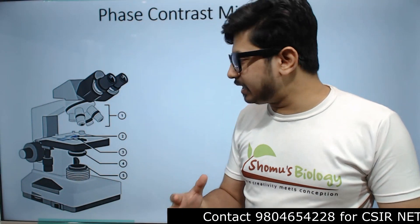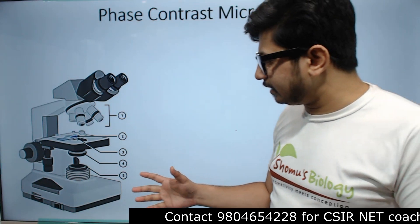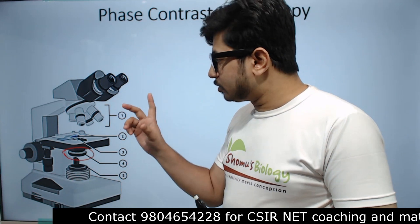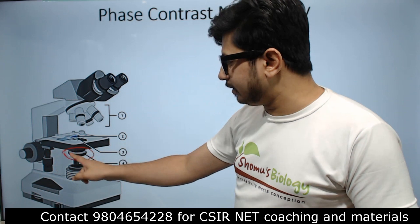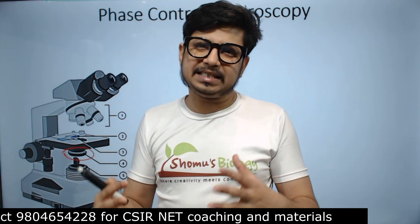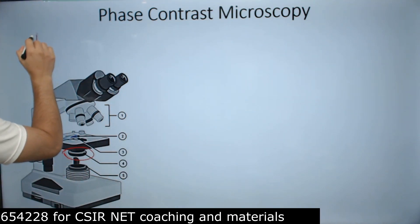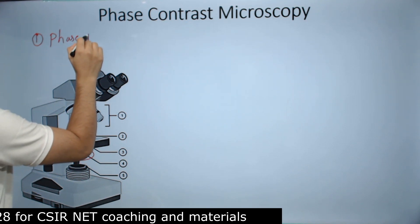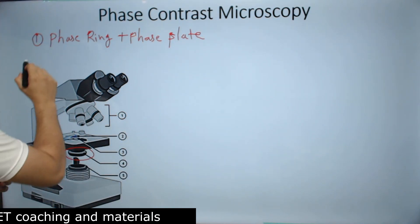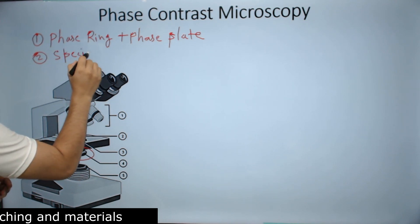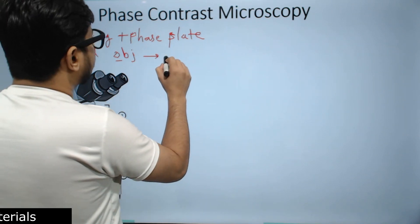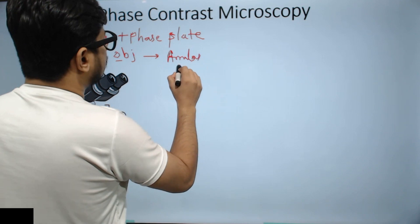Before going further, I want you to know how it looks. In phase contrast microscopy, one thing is unique — the phase plate, which is not drawn in this particular picture. So everything will be similar except the phase plate, which is the major component. Without the phase ring, a phase contrast microscope is useless. The extra components are the phase ring and phase plate, along with specially modified objective lenses known as phase contrast objective lenses, because they contain what is known as a phase annulus.